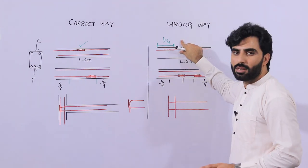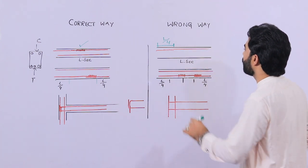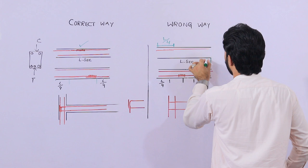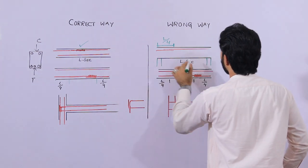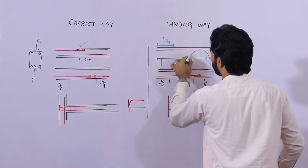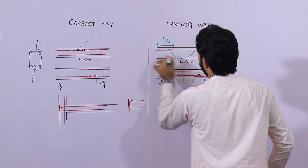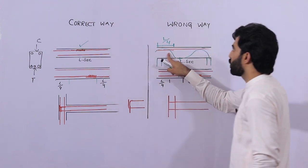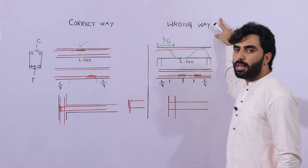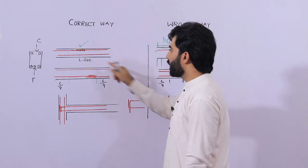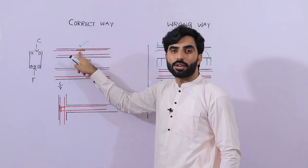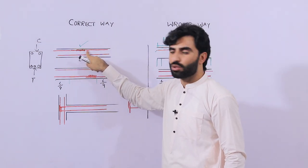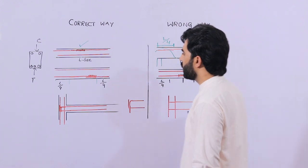Instead of a crank bar or bent-up bar, you are not able to provide the lapping — you will face more problems in the future. This is the support and this is the other support, meaning these are columns. At the supports we have negative bending moment, and at the middle we have positive bending moment. So don't provide the lapping length at the L/4 position — that is the wrong way. The correct way is to provide the lapping at the middle of the plinth beam, but only in the compression zone, not in the tension zone.